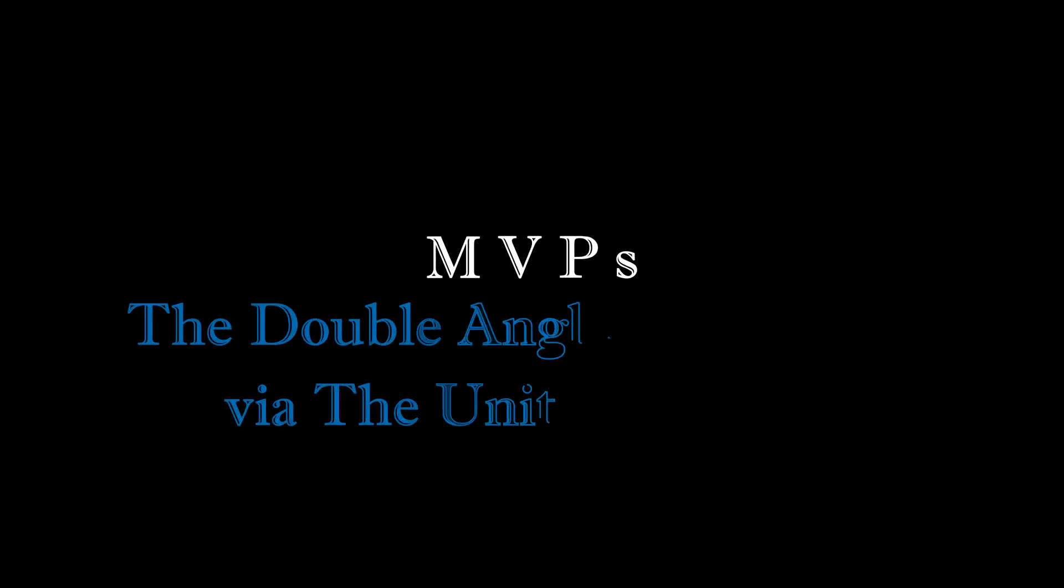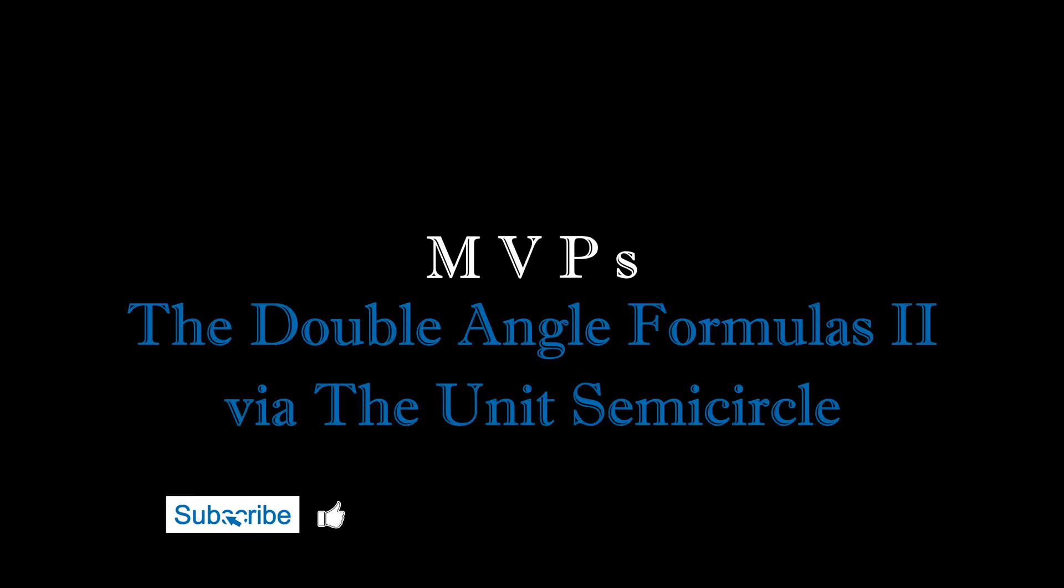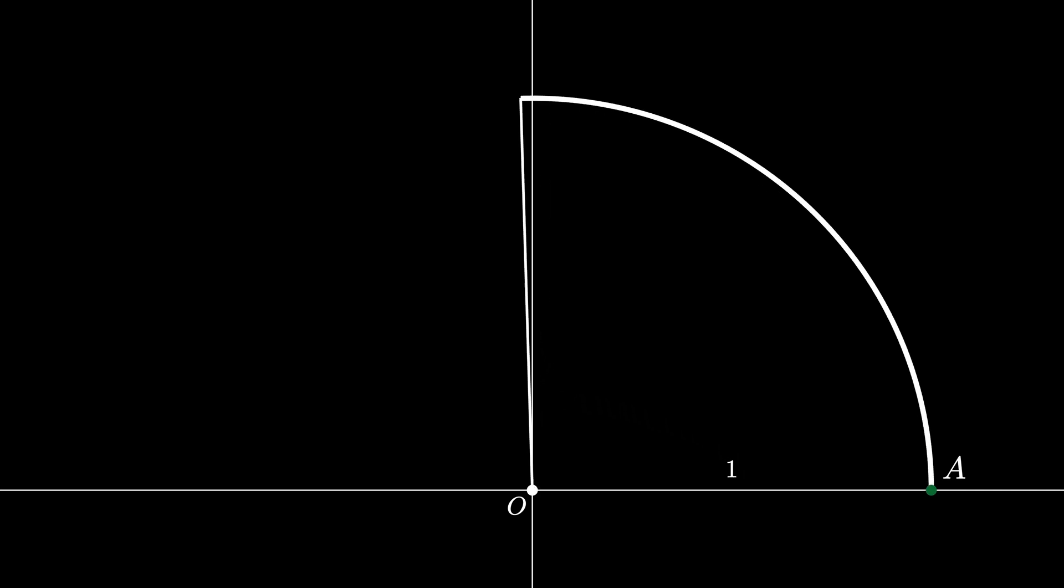Let's see an elegant semicircle proof of the double angle formulas for sine and cosine. In the xy plane, imagine the origin as a point labeled O. Then imagine a point labeled A that's exactly distance 1 from O. The line segment OA has a length of 1, so we can use it to create a semicircle of radius 1. Let's label the opposite point of the semicircle as B.